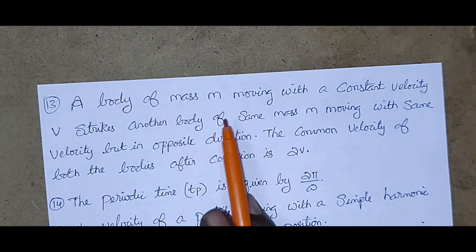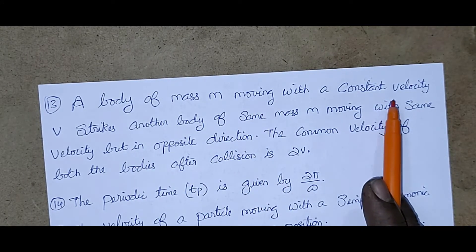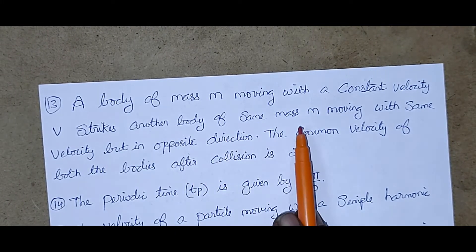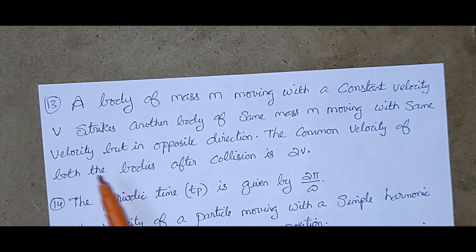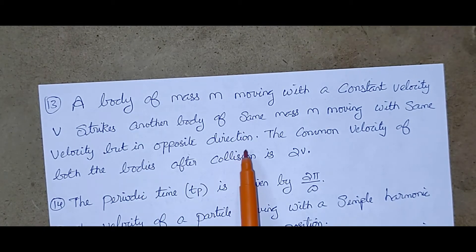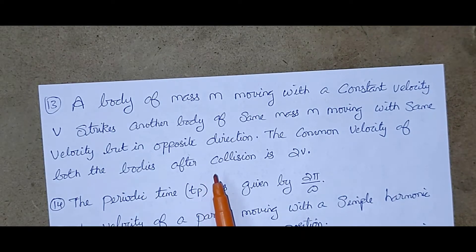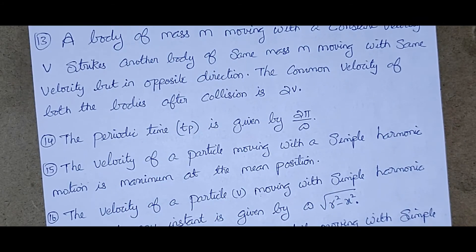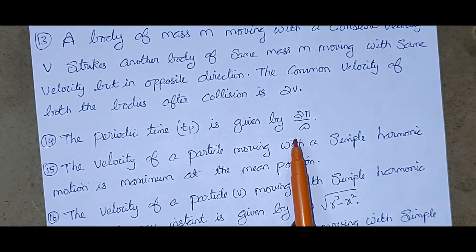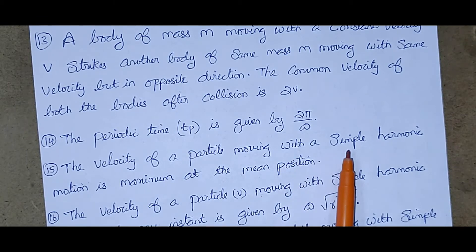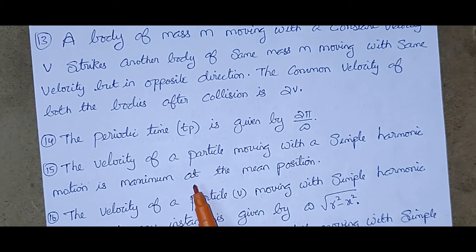A body of mass M moving with a constant velocity V strikes another body of same mass M moving with same velocity but in opposite direction. The common velocity of both the bodies after collision is 2V. The periodic time is given by 2π by omega.